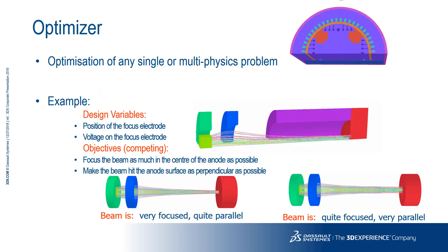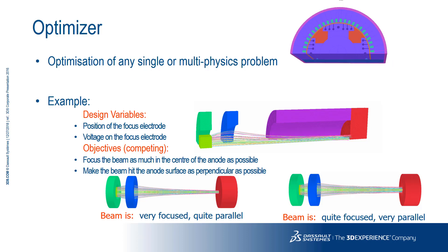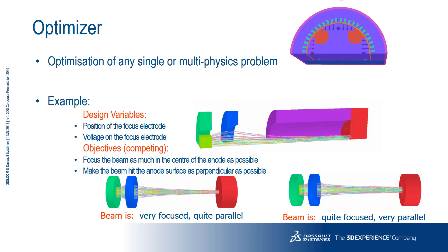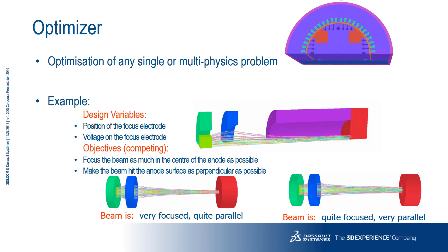The Opera Optimizer is a software tool which can assist users in achieving optimal designs. It's fully integrated with Opera and enables quick and easy investigations of possible design spaces for multiphysics problems. It uses an efficient optimization algorithm that combines deterministic and stochastic methods, used to solve single and multi-objective design and optimization problems.